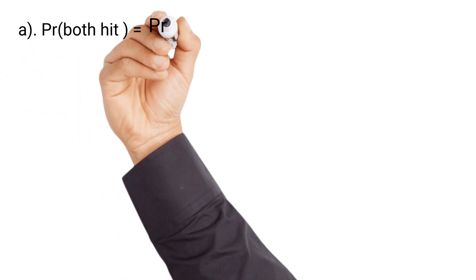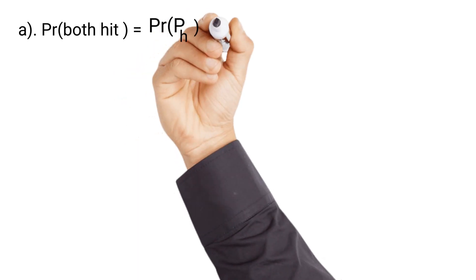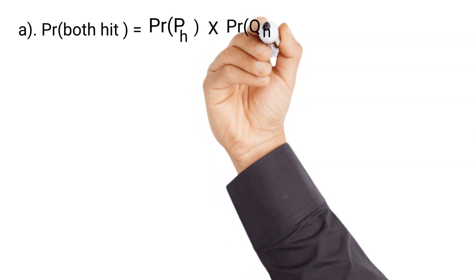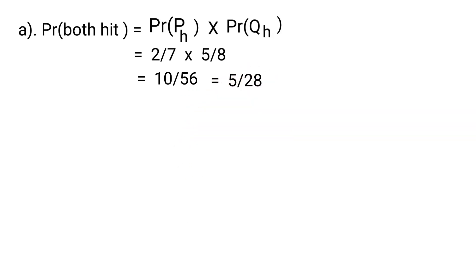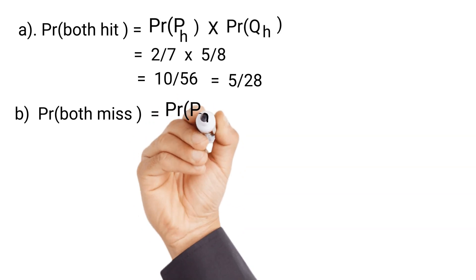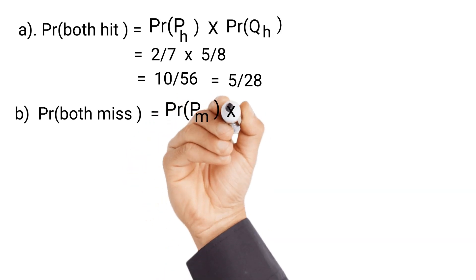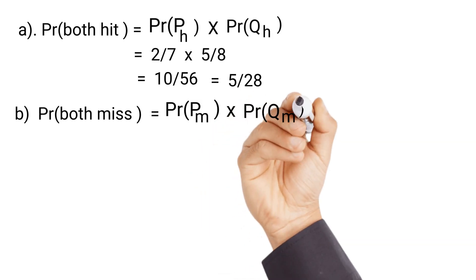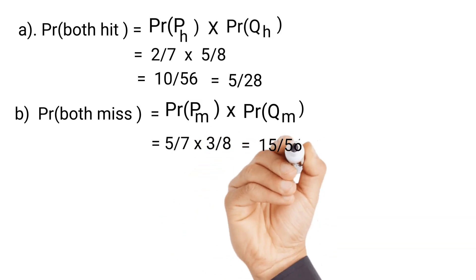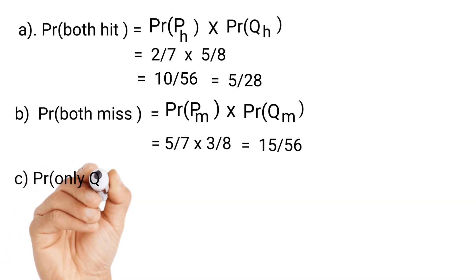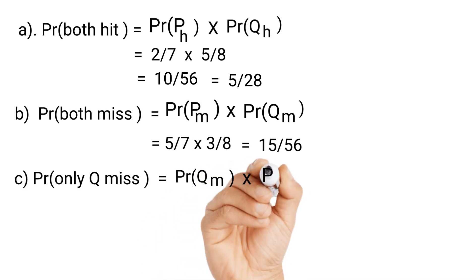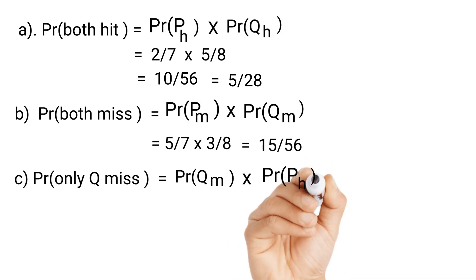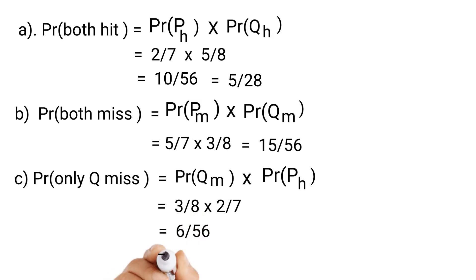Probability that both hit the target means probability P hits times probability Q hits: 2 over 7 times 5 over 8, which gives 10 over 56, reduced to 5 over 28. Probability that both miss is P misses times Q misses: 5 over 7 times 3 over 8, which is 15 over 56. For only hunter Q missing the target: that is 3 over 8 times 2 over 7, which gives 6 over 56, reduced to 3 over 28.